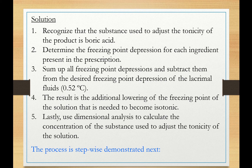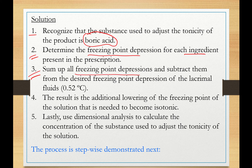Let us go through the method step by step. First, recognize that the prescription calls for boric acid to make the solution isotonic. Second, determine the freezing point depression caused by each ingredient in the prescription and sum them up. Then subtract that sum from 0.52 — the freezing point depression of biological fluid. The result is the additional lowering of the freezing point needed to become isotonic. Then use dimensional analysis to calculate the concentration of boric acid needed to adjust the tonicity.